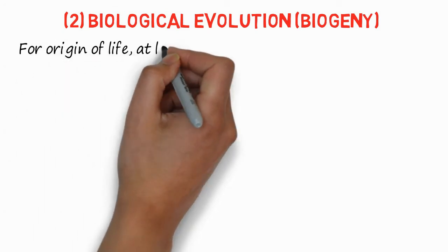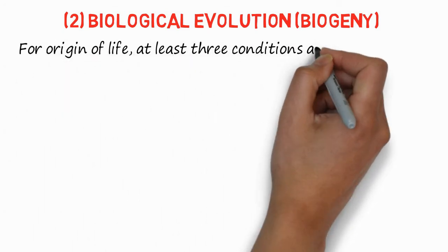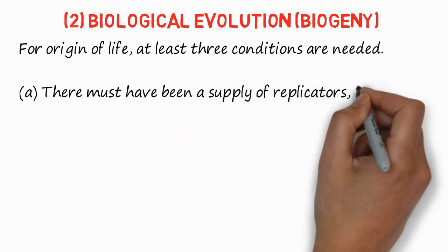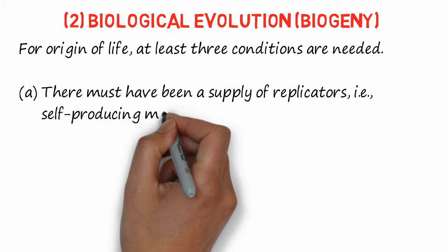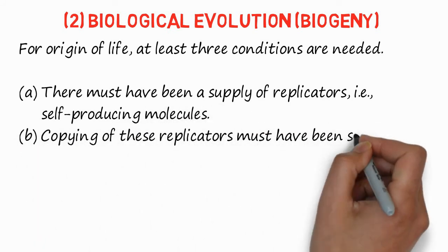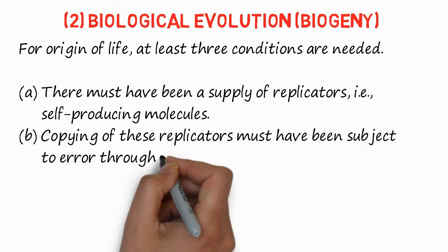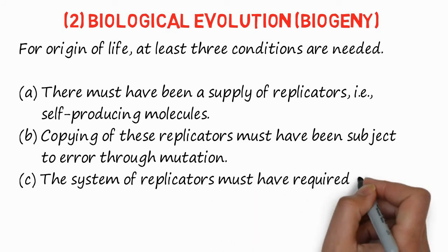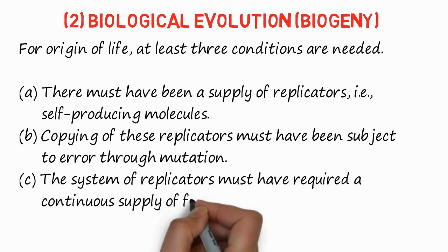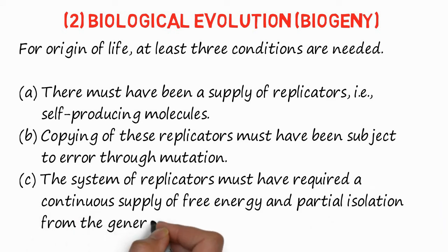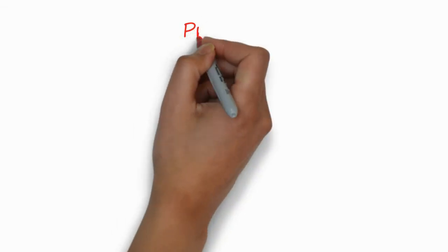Now, the second type of evolution is biological evolution, or biogeny. For the origin of life, at least three conditions should be fulfilled: there must have been a supply of replicators — that is, self-producing molecules — and copying of these replicators must have been subject to error through mutation; the system of replicators must have required a continuous supply of free energy; and partial isolation from the general environment.